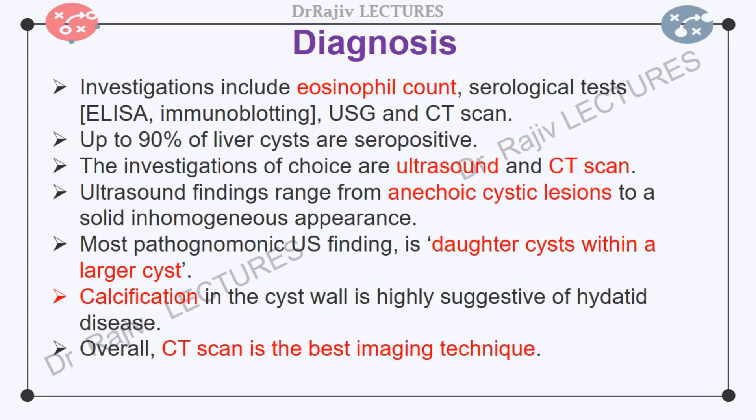Always maintain a high index of suspicion. There is a raised eosinophil count. Serological tests such as ELISA and immunoblotting point towards the diagnosis. Up to 90% of liver cysts are seropositive, whereas only 50% of lung cysts are seropositive. The investigations of choice are ultrasound and CT scan. Ultrasound findings range from purely anechoic cystic lesions to a completely solid, inhomogeneous appearance. Ultrasound clearly demonstrates the floating membranes, daughter cysts and hydatid sand in purely cystic lesions. A rosette appearance is seen when daughter cysts are present. Calcification in the cyst wall is highly suggestive of hydatid disease. The diagnosis is made by combining a good history and clinical examination supplemented by serology and imaging.